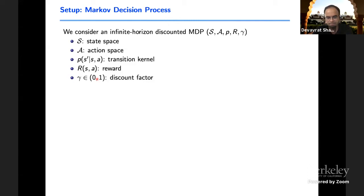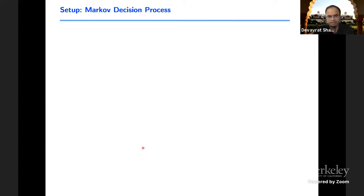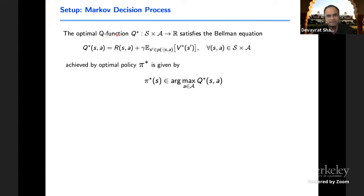We've got the state space S, action space A, the transition kernel, reward function, and the discount factor. If there's a policy π that maps state to action, we define the value function as this. And of course, the optimal value function V* is the one that is achieved through an optimal policy.